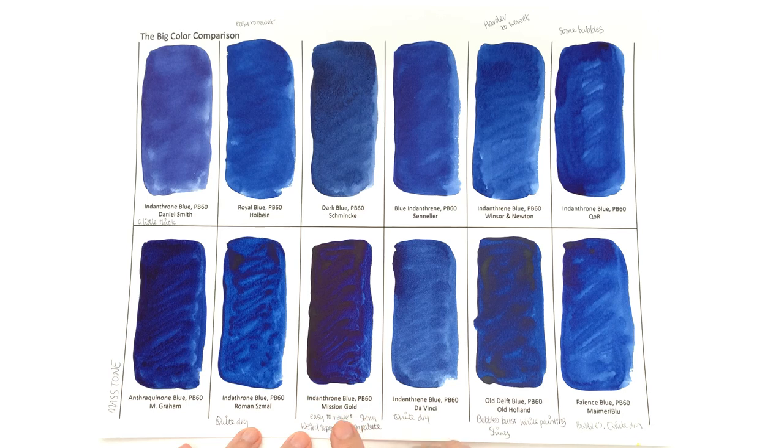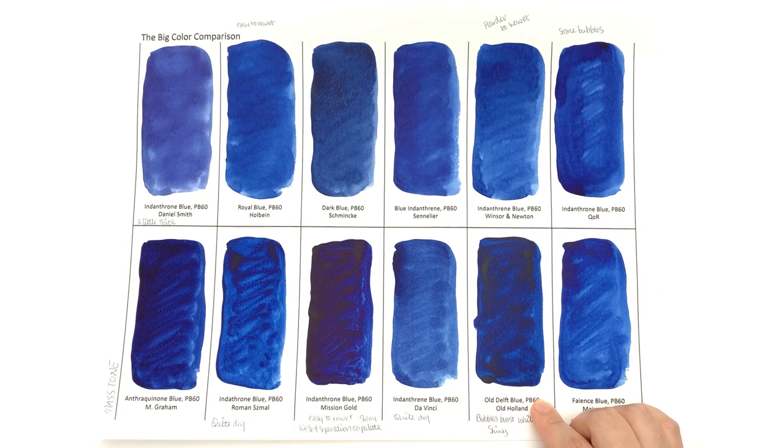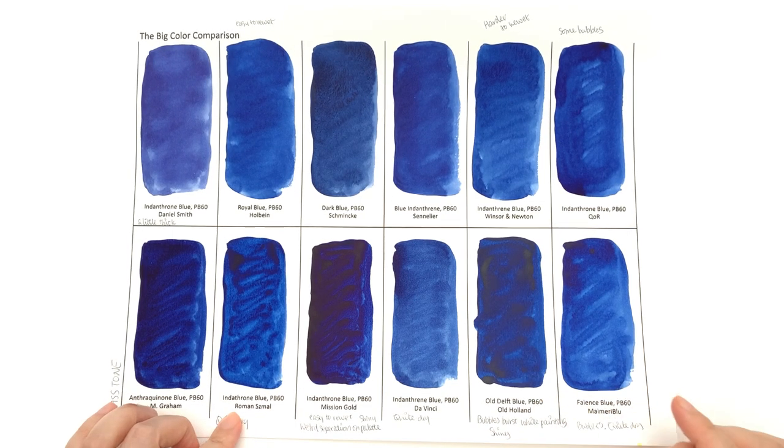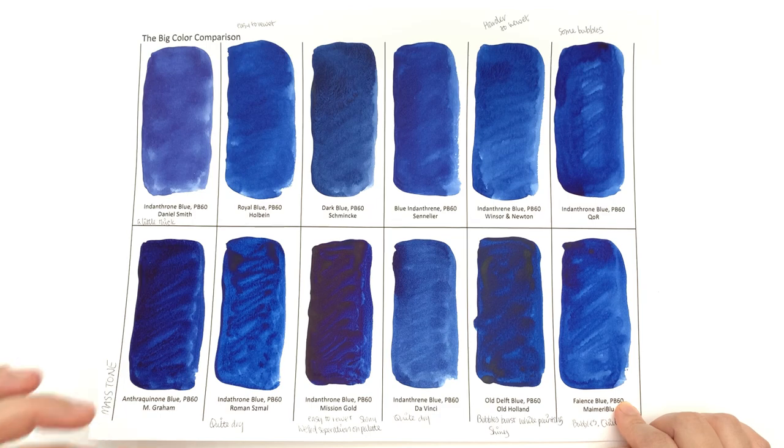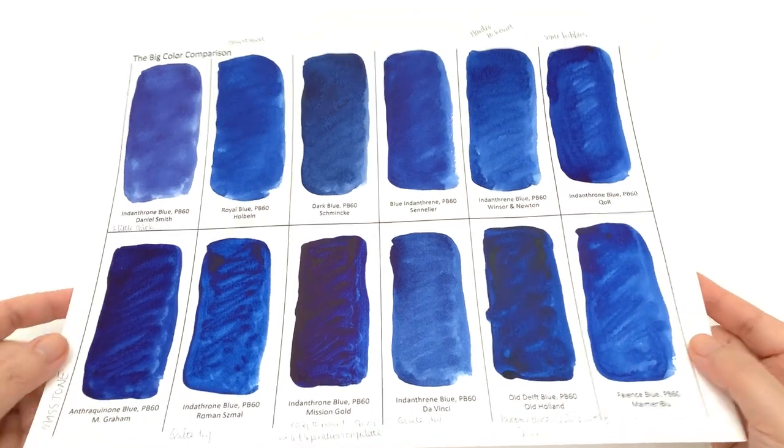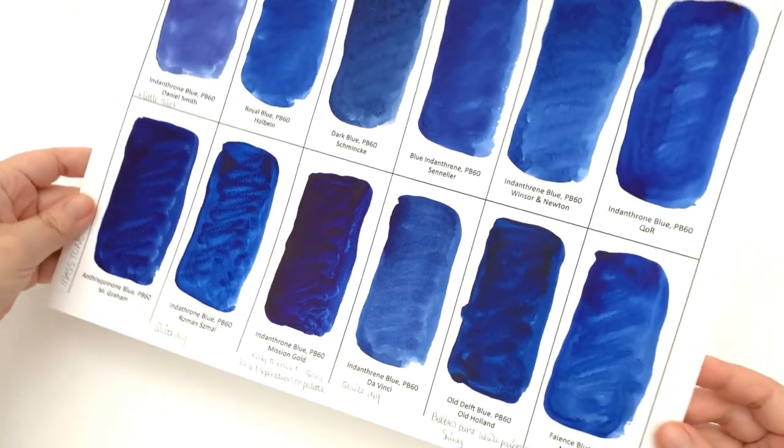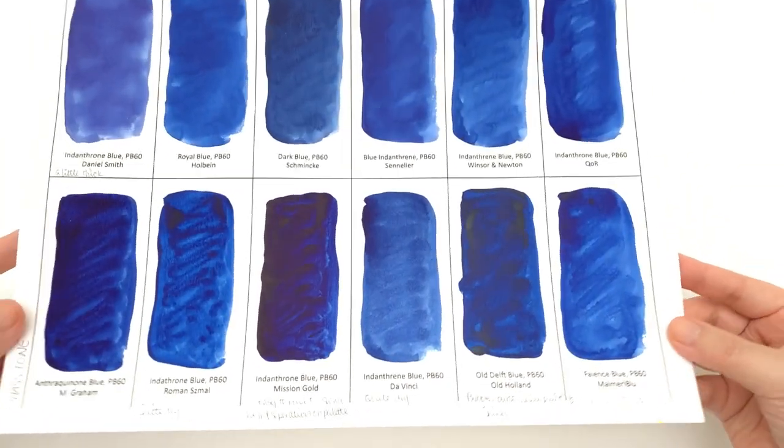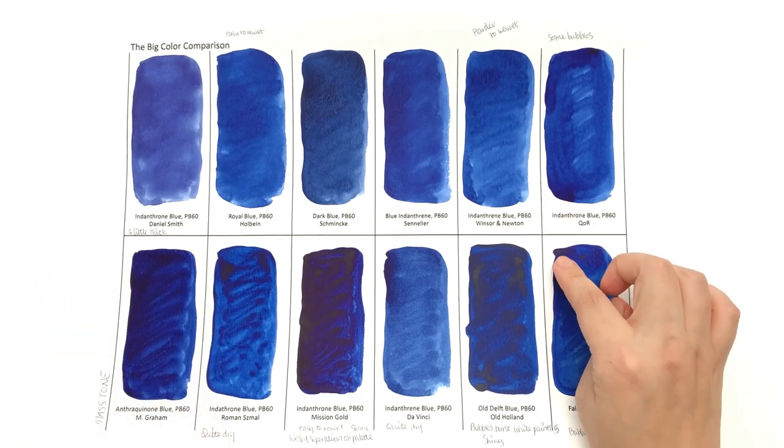In terms of shininess, the Old Delft Blue from Old Holland also suffers from that shininess quite a lot. Roman Szmal and Mijello Blue suffer from a tiny bit of shininess when you use it really, really concentrated. So I don't know if the camera can catch this - I will wave the paper around and hope that it will catch, but you have a little bit here, a little bit there.